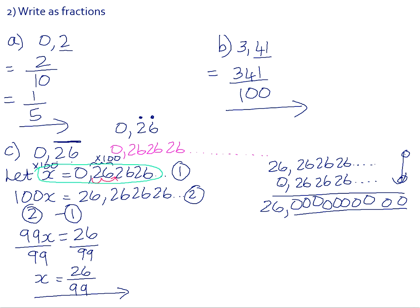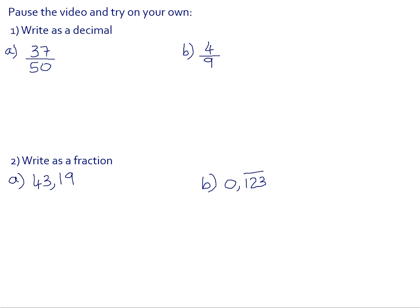There are some for you to try on your own in your homework book, so please pause the video here. Number 1a: 37 over 50. 50 is a factor of 100, so we can rewrite this as a fraction over 100. We multiplied 50 by 2 to get to 100, so we multiply 37 by 2, which is 74, giving us 0.74 as a decimal.